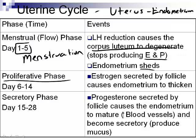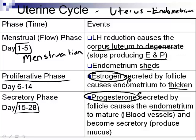From day 15 to 28, after ovulation has formed the corpus luteum, progesterone is secreted and causes the endometrium to become mature and secretory. Mature means more blood vessels for more nutrients; secretory means producing mucus. Even though estrogen is present throughout and progesterone is present earlier, the dominant hormone is heavy estrogen in the proliferative phase and heavy progesterone in the secretory phase because of their respective functions.